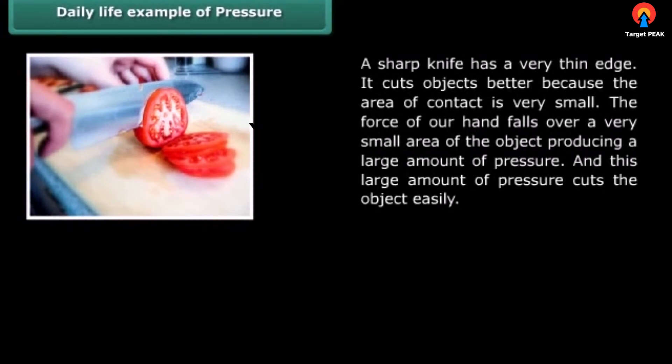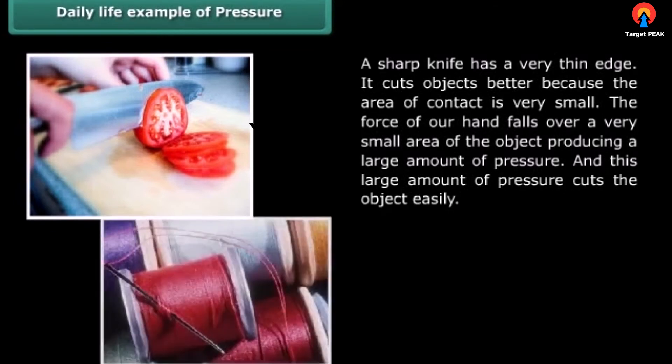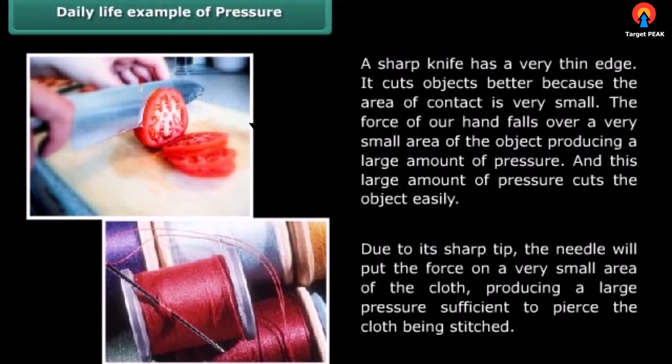A sharp knife has a very thin edge. It cuts objects better because the area of contact is very small. The force of our hand falls over a very small area of the object, producing a large amount of pressure, and this large amount of pressure cuts the object easily. Due to its sharp tip, the needle will put the force on a very small area of the cloth, producing a large pressure sufficient to pierce the cloth being stitched.